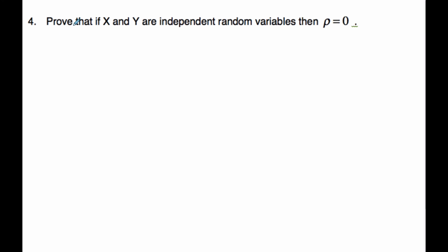Let's try another example. Prove that if X and Y are independent random variables, then ρ equals 0. Well, if that's true, I know covariance of X, Y equals the expectation of XY minus μ_X μ_Y.